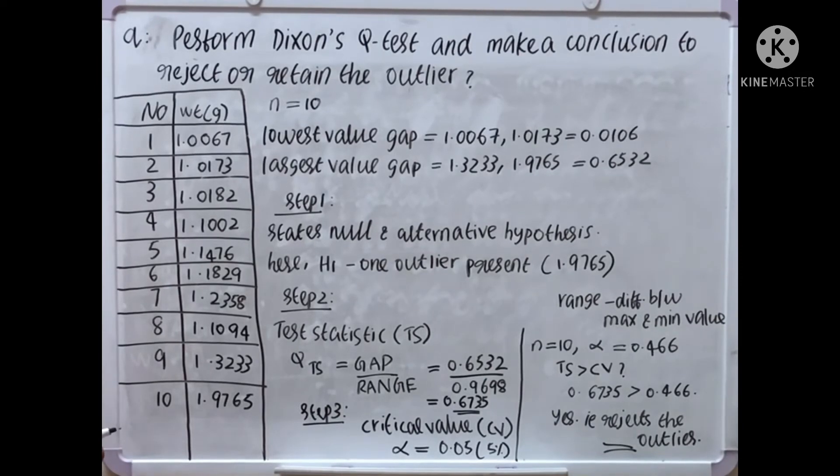And for N equal to 10, alpha equal to significance equal to 0.466. From the significance table we get that value, from the significance table. For N equal to 10, so alpha equal to 0.466.